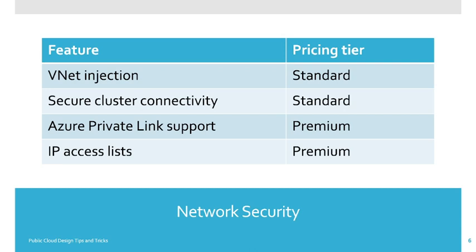Now let's try to understand the various network security features. There are four features. One is VNet injection, which is supported with the Standard Plus pricing tier. Second is secure cluster connectivity, also supported with the minimum Standard pricing tier. Third is Azure Private Link support, which is only supported with Premium. And fourth is IP access list, also covered with the Premium tier.